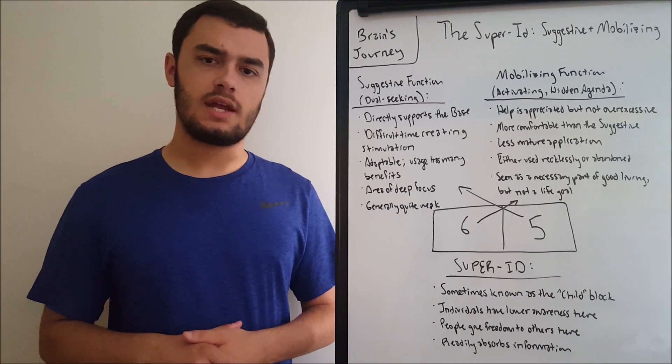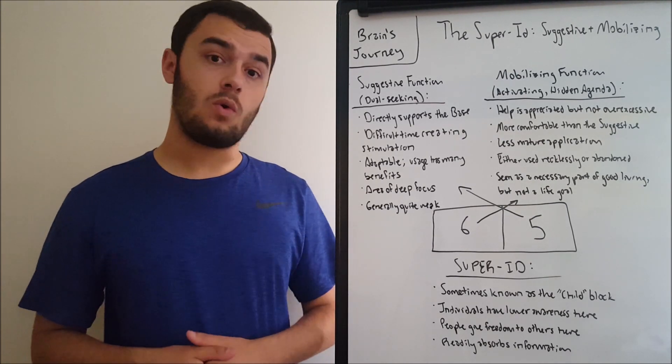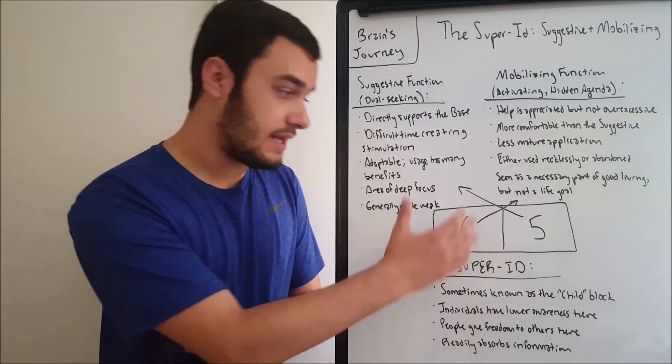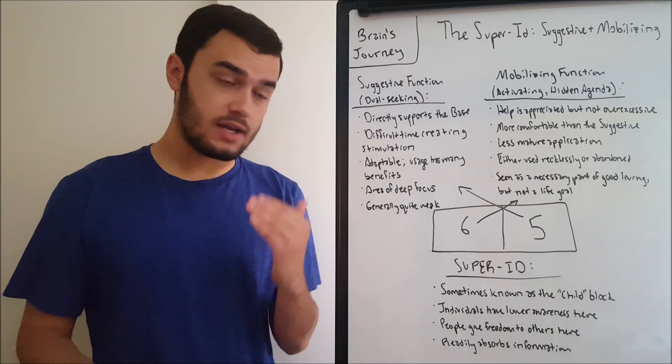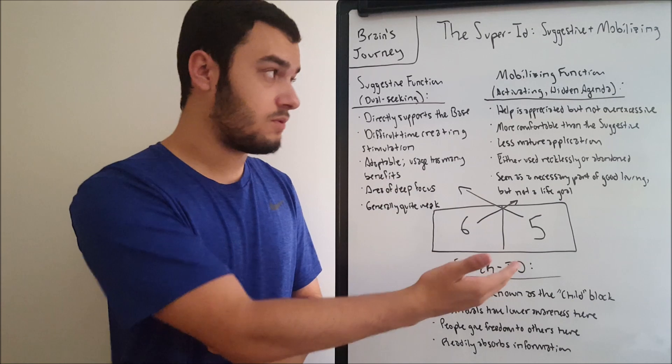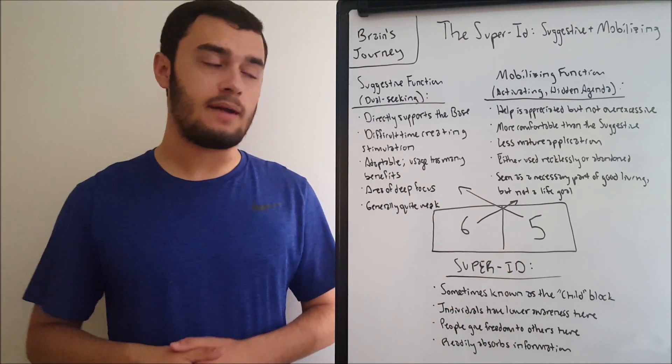The first thing we're going to be looking at is the suggestive function, or the fifth function. Again, these two are switched, this is how you'll see it in the Model A diagrams with the blockings. But obviously I want to put the suggestive function before the mobilizing, so the arrows are there to indicate that.